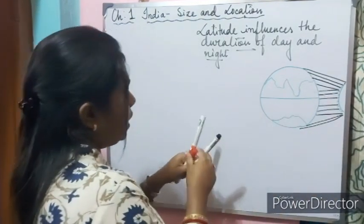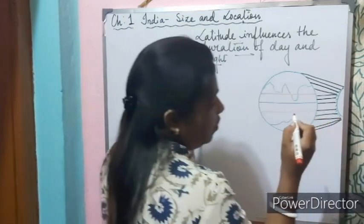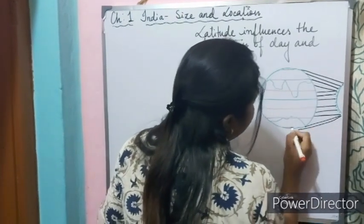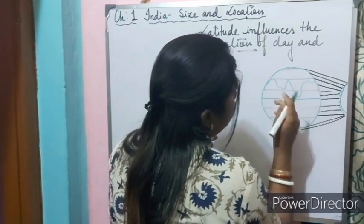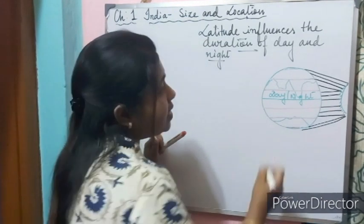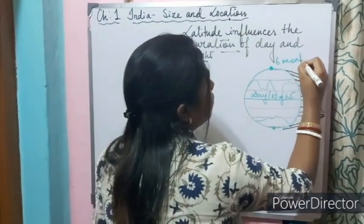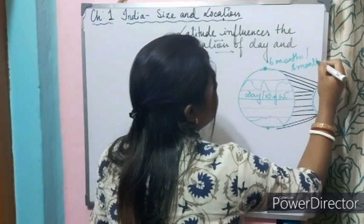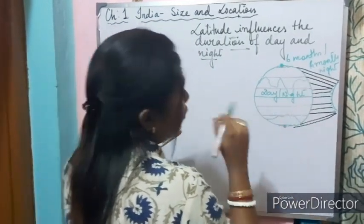Near the equator, areas receive direct sun rays. Moving away, areas receive moderate sun rays, and at the poles, very little sunlight is received at all. Near the equator, the difference between day and night is hardly felt, while at the poles, there can be six months of continuous day and six months of continuous night.